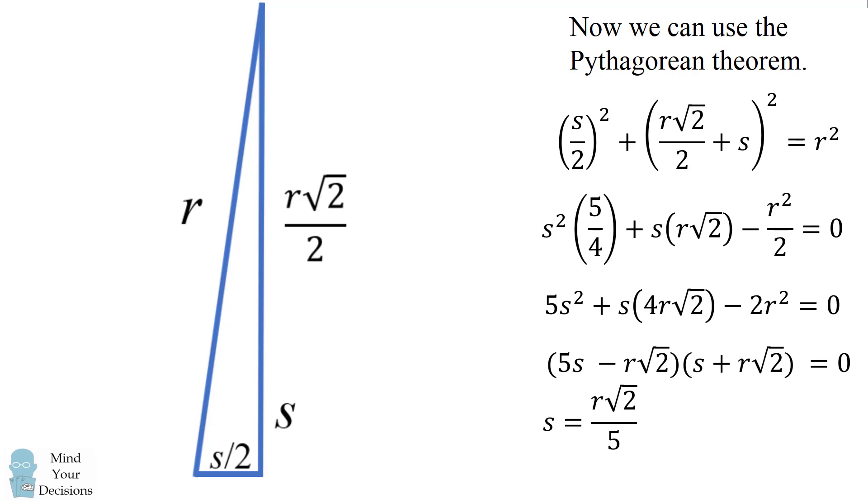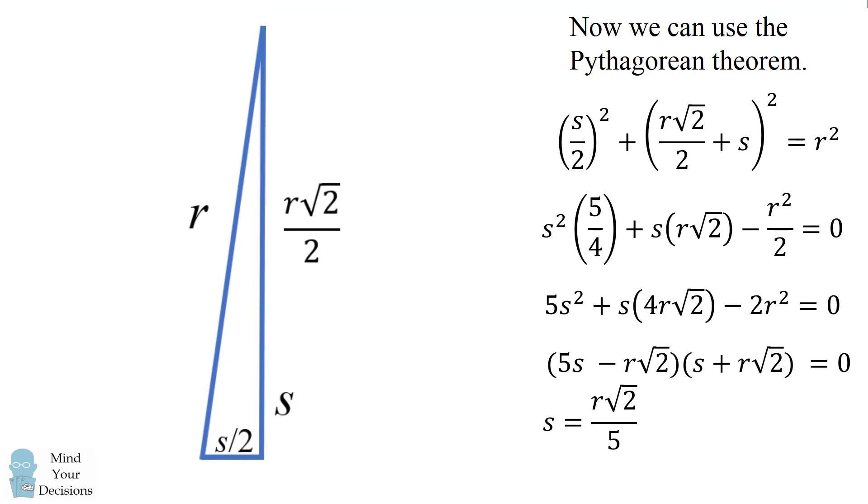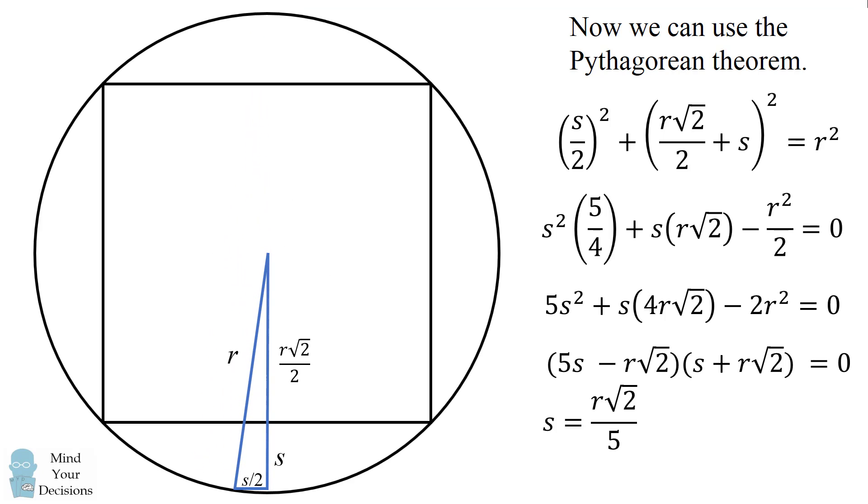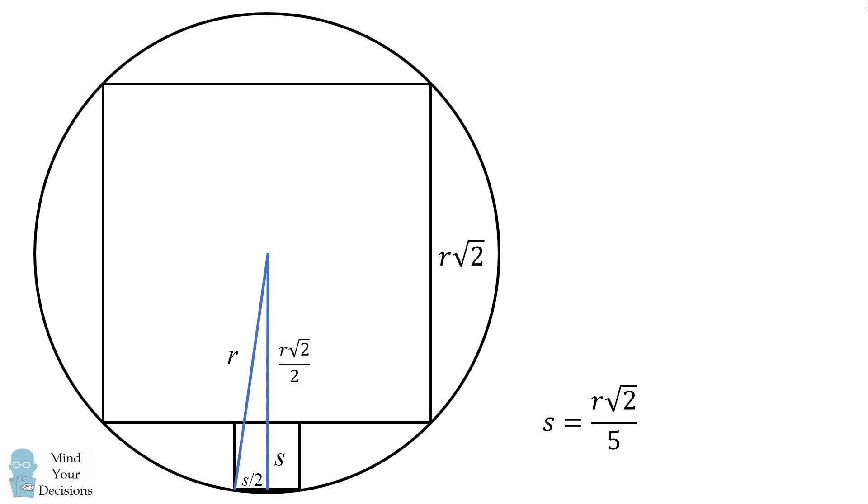So we've now figured out s in terms of r. So now let's return to our main diagram. Let's just focus on the two things we figured out. We figured out the length of the large square side and we figured out the length of the small square side. And both of these are in terms of the radius r.